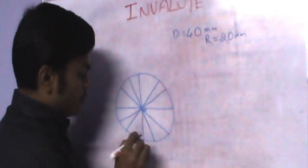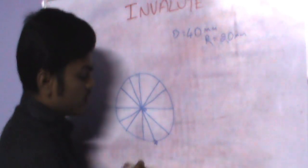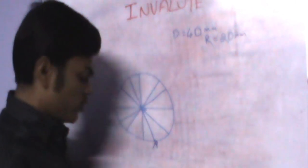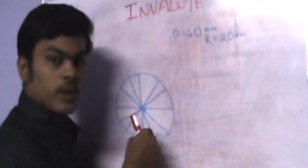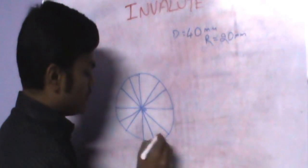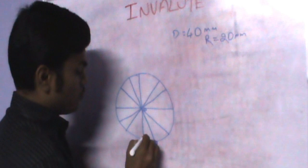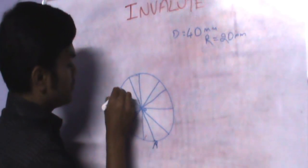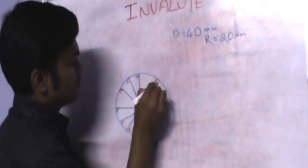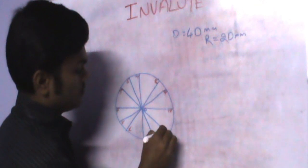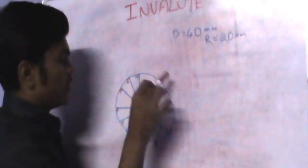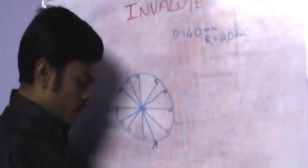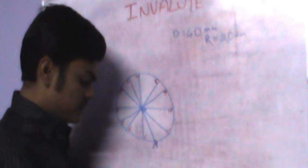Take a point A anywhere on the circle. I have taken it here. I have divided the circle into 12 equal parts and I am going to give names to each division point: 1 dash, 2 dash, 3 dash, 4 dash, 5 dash, 6 dash, up to 11 dash, because one point is already named A. From point A, draw a tangent to the circle.